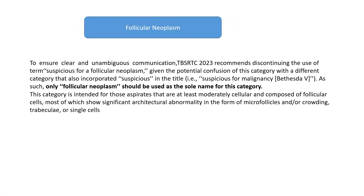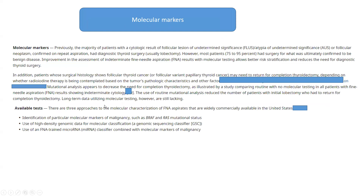Regarding follicular neoplasm: to ensure clear and unambiguous communication, the current Bethesda system discontinued the use of the term 'suspicious for follicular neoplasm.' The category is now referred to solely as follicular neoplasm. This category is intended for aspirates that are at least moderately cellular, composed of follicular cells, most of which show significant architectural abnormality in the form of microfollicles and crowding of trabecular or single cell patterns.